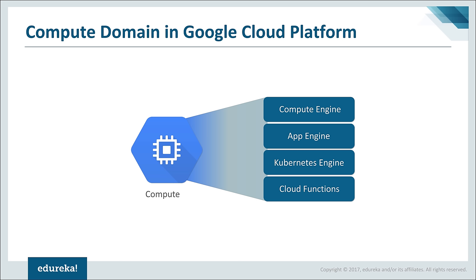Then you have the Kubernetes Engine, probably the most interesting service. If you have applications running inside Docker containers and you want to deploy those containers on the cloud, you can use Kubernetes Engine. All you have to do is migrate your container onto the cloud and it will be deployed on the server as if it had been deployed locally.